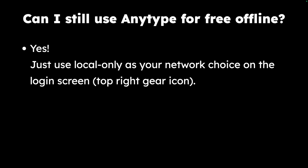You can use the local only as your network choice, and if you don't see this you'll need to log out of the AnyType app. Whether you're on desktop or mobile, there should be a gear icon in the top right corner, and if you select that gear icon you can choose AnyType network, local only, or self-hosted.